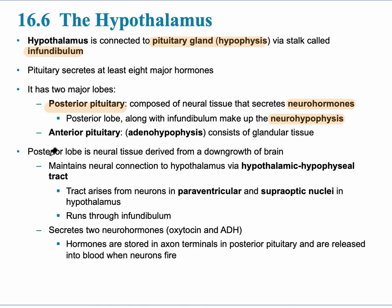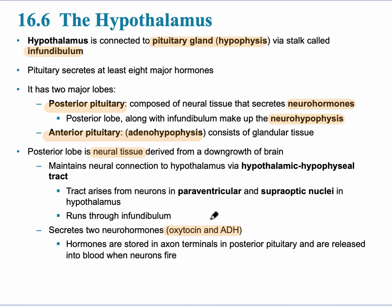The anterior pituitary is more of a traditional endocrine tissue, also called the adenohypophysis, and it secretes several different hormones. The posterior lobe maintains a neural connection to the hypothalamus — hence the 'neuro' part of neuroendocrine. Oxytocin and ADH are released from the hypothalamus and stored in axon terminals in the posterior pituitary, then released when needed.